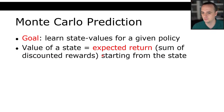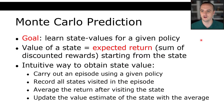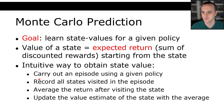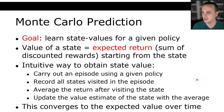The value of a state is the expected return starting from that state and following a policy. The overall method: carry out an episode using a given policy, record all the states visited, average the return after visiting each state, and update the value estimate of the state with the average. Believe it or not, this actually converges to the expected value — the true value of those states over time. If we take enough samples, meaning we record enough episodes, Monte Carlo prediction will converge to the actual value of states or state-action pairs.